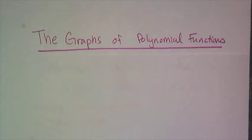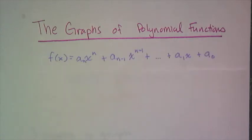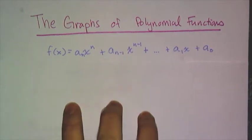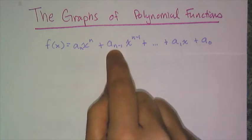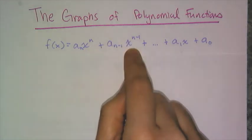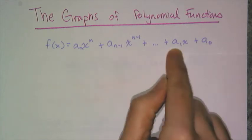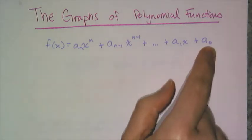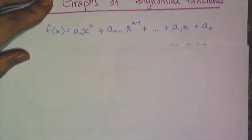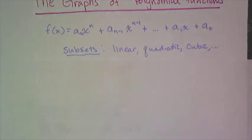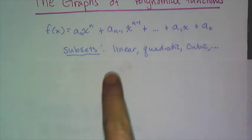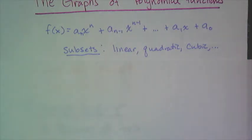In this lesson we're going to talk about graphing polynomial functions. In general they look like this: some function where you have some coefficient times the power of x plus another coefficient times another power of x, usually in decreasing order, so that at the very end you have a lone constant term. Some subsets that we know of — the linear, the quadratic, and the cubic — are all polynomial. If you know what these three parent functions look like, that'll help us when we talk about something called behavior at the roots.